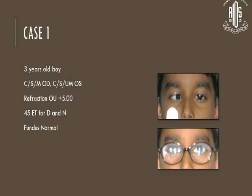Accommodative esotropia. The patient is squinting in the right eye. Cycloplegic refraction was done, and there was orthophoria with glasses and central fixation on the fovea in both eyes. The refraction was plus 7, but plus 5 was given. There was initially around 45 prisms, around 20 to 25 degrees, and for both distance and near the angle was the same. Retina was normal in both eyes, and once glasses were given, it became orthophoria.